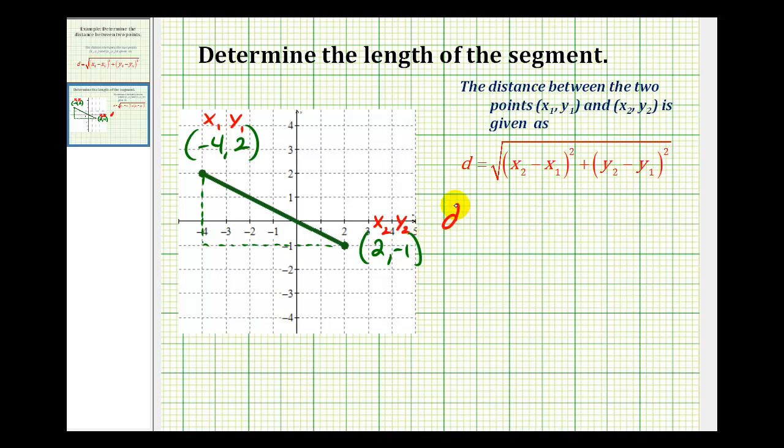So we'll have the distance equal to the square root of the quantity (x₂ - x₁)². That's going to be (2 - (-4))² plus (y₂ - y₁). That'll be (-1 - 2)².